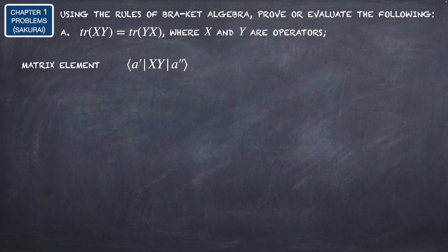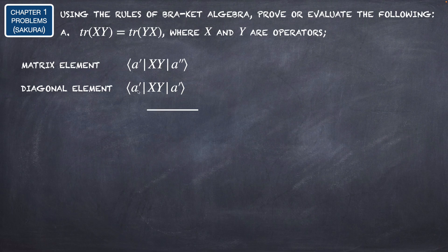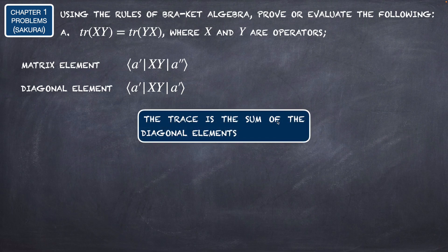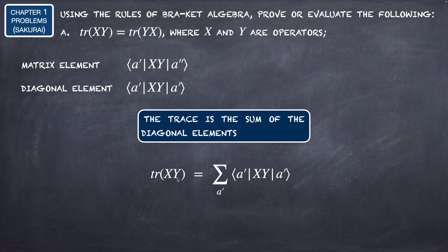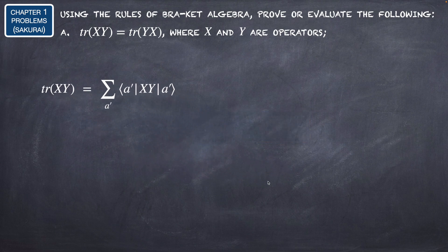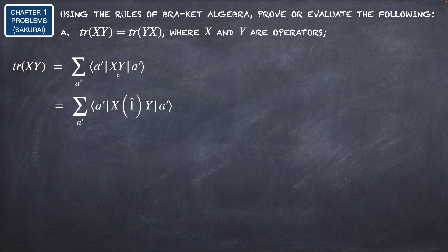First, let's remind ourselves that this element is a matrix element of the matrix XY — specifically, these are the diagonal elements of this matrix XY, where we have the same index, the same eigenvalue, for both the ket and the bra. The trace is the sum of the diagonal elements, so the trace of XY is the summation over a' of these diagonal elements.